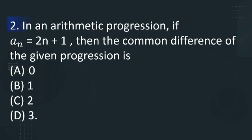The second question is: in an arithmetic progression, if a_n is equal to 2n plus 1, then the common difference of the given progression is A: 0, option B: 1, option C: 2, option D: 3.